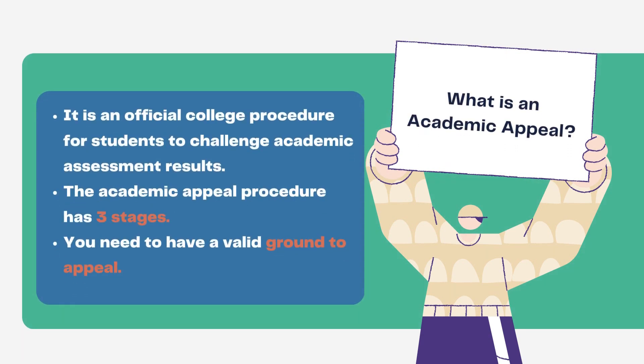An Academic Appeal is an official college procedure for students to challenge their academic assessment results. This could include marks, progression decisions and degree classifications. Simply put, if someone has affected your academic performance and you have not achieved the mark you expected, you may be able to appeal.